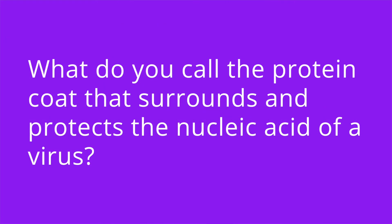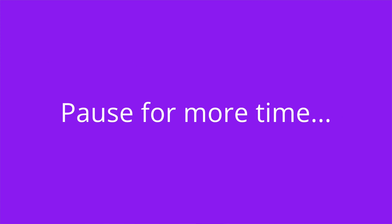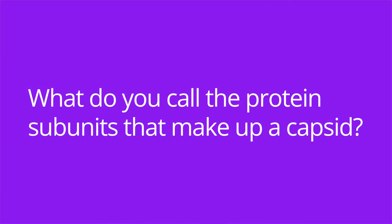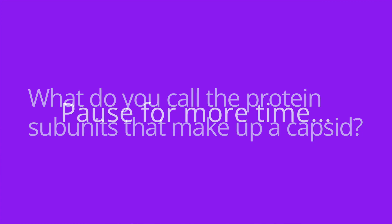It's quiz time, and I have five questions for you. Question number one: what do you call the protein coat that surrounds and protects the nucleic acid of a virus? The answer is the capsid. Number two: what do you call the protein subunits that make up a capsid? The answer is capsomeres.